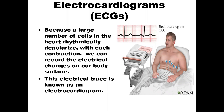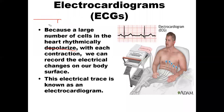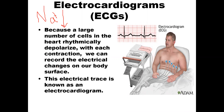You all might be knowing these things, but just to brush up: a large number of cells in the heart rhythmically depolarize with each contraction. We can record the electrical changes on our body surface. Depolarization is nothing but an electrical impulse — there will be a change in the ions, like the flow of ions. In cardiac muscle, during depolarization, mainly the sodium will be moving in and the potassium will be moving out, so there will be Na+ influx. Due to the electrical activity happening inside the heart, it can be recorded — that is the electrocardiogram.